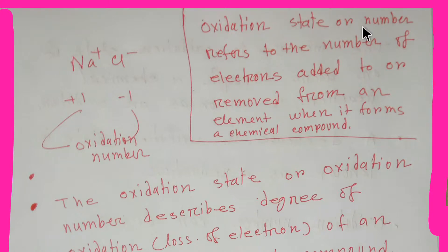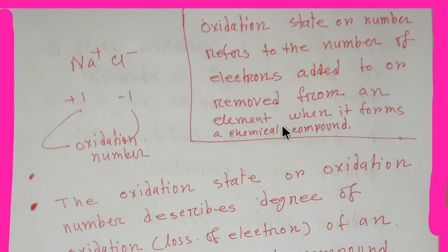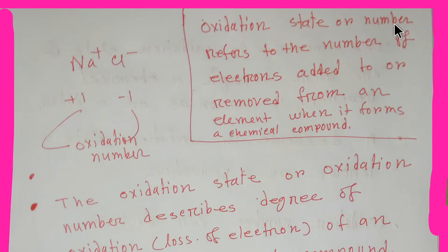So what is the definition of oxidation state or oxidation number? Oxidation state or number refers to the number of electrons added to or removed from an element when it forms a chemical compound. Here sodium is losing an electron and chlorine is gaining an electron.